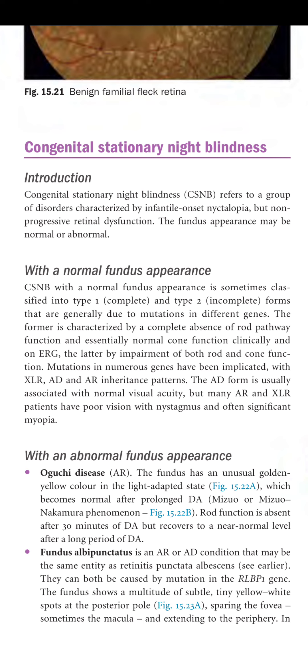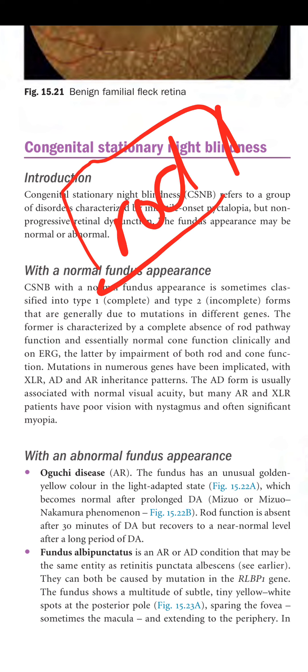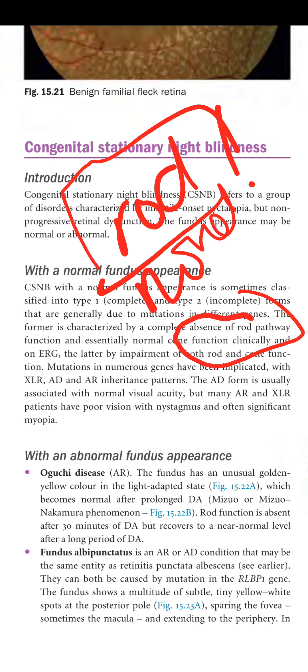The complete form (type 1) is characterized by complete absence of rod pathway function with essentially normal cone function clinically and on ERG. The incomplete form (type 2) involves impairment of both rod and cone function. Some cases show absence of rod function with almost normal cone function, while others show both rod and cone dysfunction.